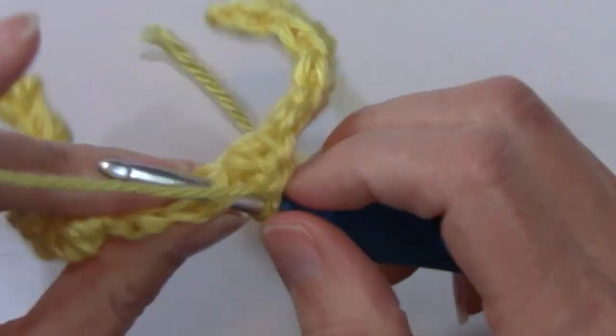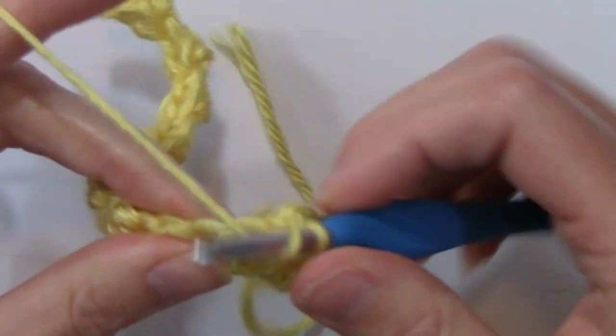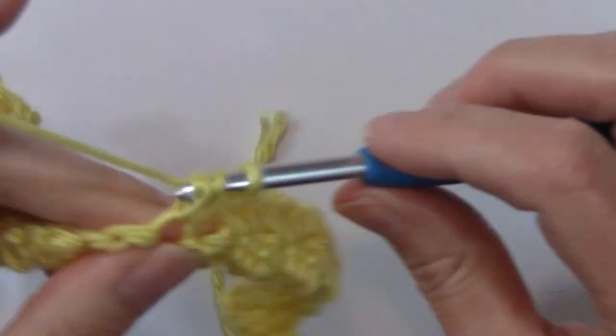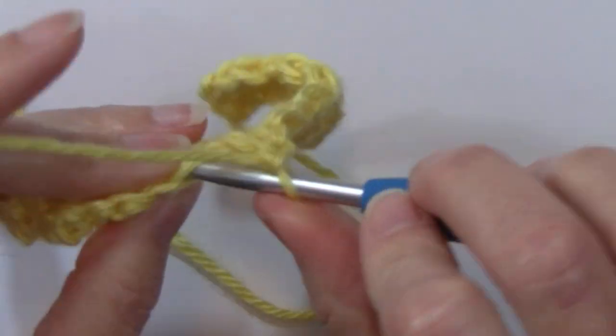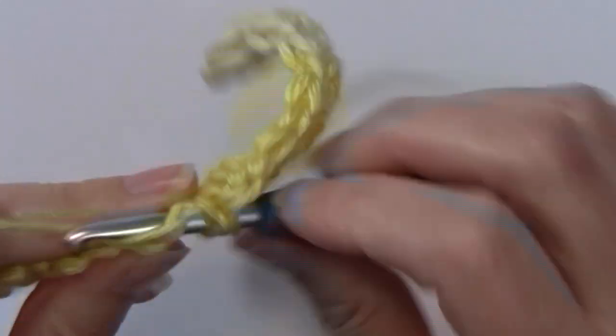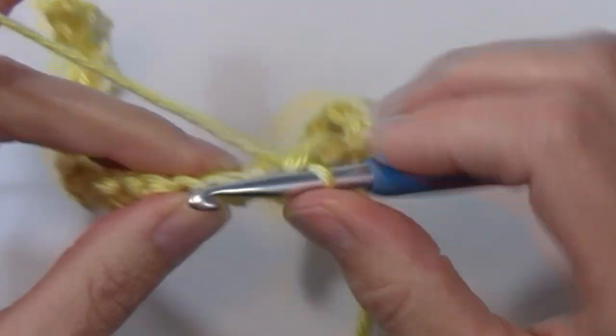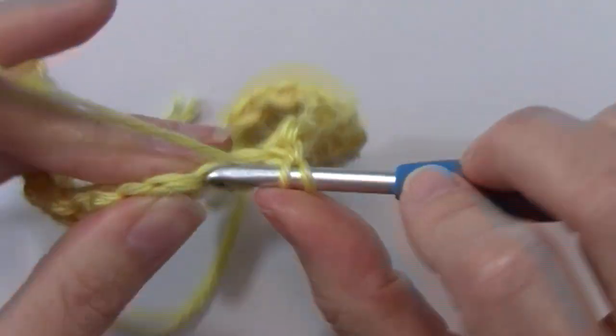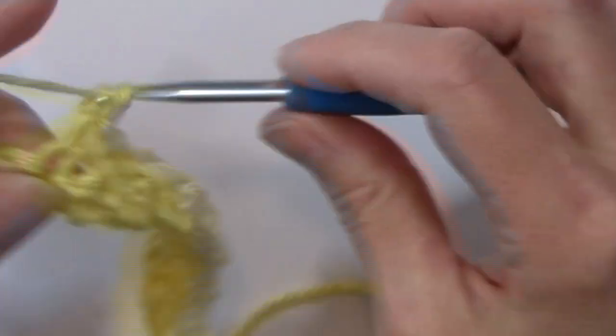So as you're working up, you're alternating stitches as well as across. So single crochet, double crochet, and you're going to continue that on down through the end of this row.